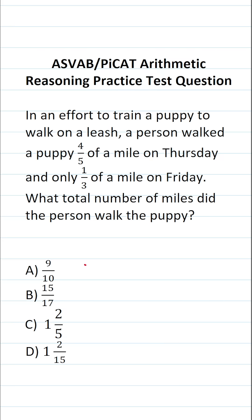This arithmetic reasoning practice test question for the ASVAB and PyCat says: in an effort to train a puppy to walk on a leash, a person walked a puppy four-fifths of a mile on Thursday and only one-third of a mile on Friday. What total number of miles did the person walk the puppy?